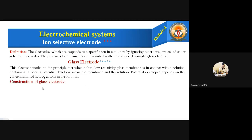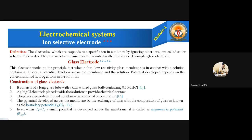The construction of a glass electrode has five key points. First, it consists of a long glass tube with a thin-walled glass bulb containing 0.1 molar hydrochloric acid (concentration C1). Second, a silver/silver chloride electrode is placed inside the solution to provide electrical contact. Third, the glass electrode is dipped in a new solution of unknown concentration C2. Fourth, the potential developed across the membrane by exchange of ions with the glass composition is known as the boundary potential, given by: Eb = E2 − E1.